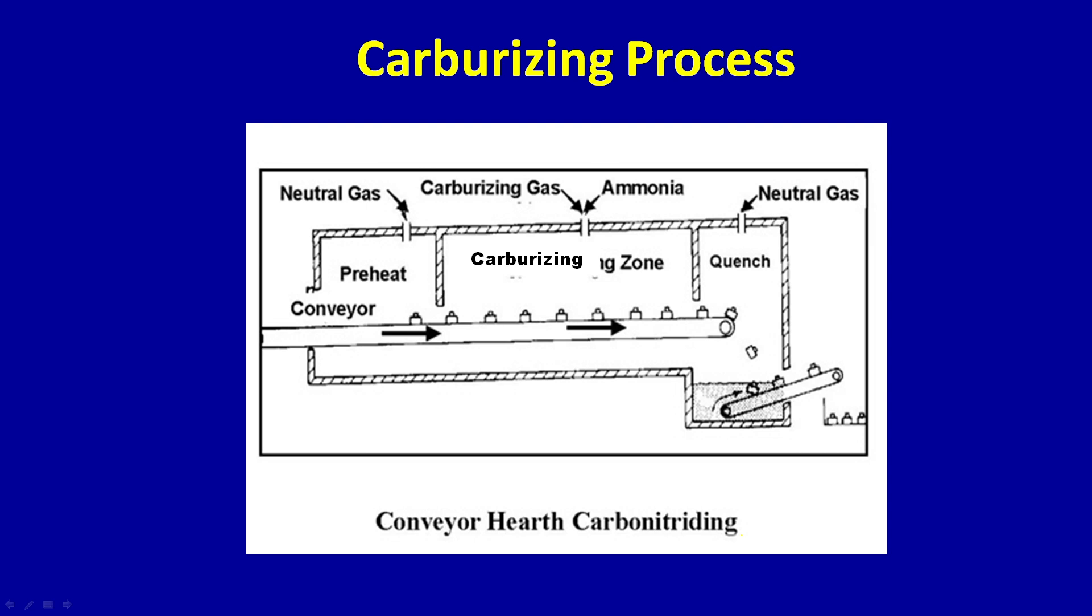This is one of the carburizing processes, called conveyor carburizing or carbonitriding. You can see the components are put in a conveyor belt, and you can have a carbonizing gas or burn ammonia also. Ammonia produces nitrogen, so both CO and nitrogen oxide can fill this area, then dissociate to produce carbon and nitrogen which diffuses into the steel surface. Finally, it's quenched by natural gas or water depending on your requirement. This is a systematic process adopted by many industries.